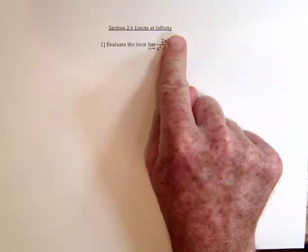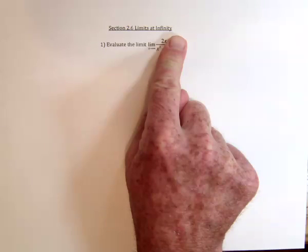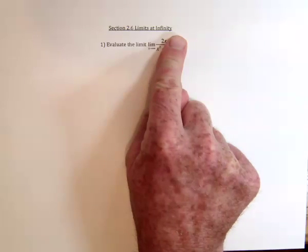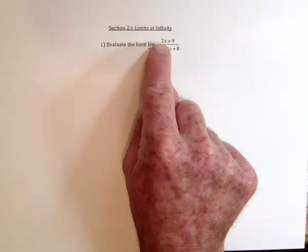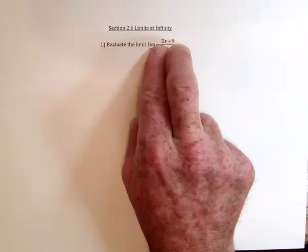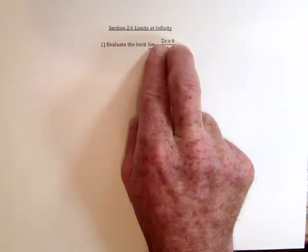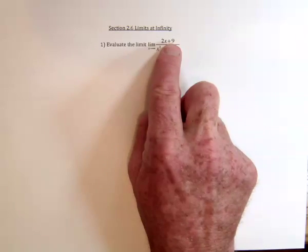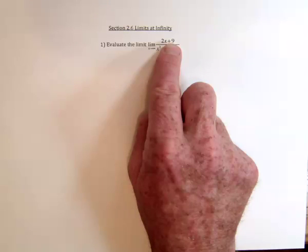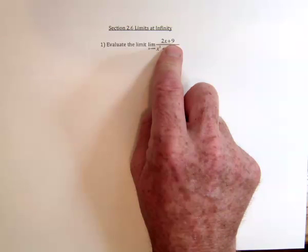My favorite is you really only need to compare the leading term for each polynomial, because if x is going to infinity, for the numerator we've got 2 times x, so that's going to be 2 times infinity, which is infinity. Adding 9 really doesn't matter, because if you already have infinity, adding 9 really doesn't do anything.